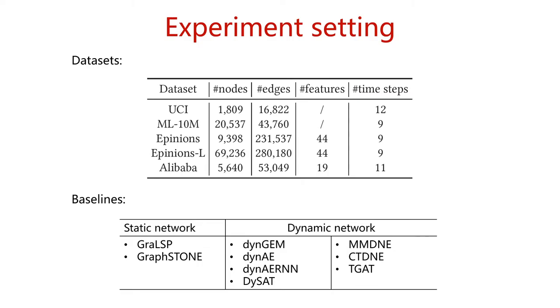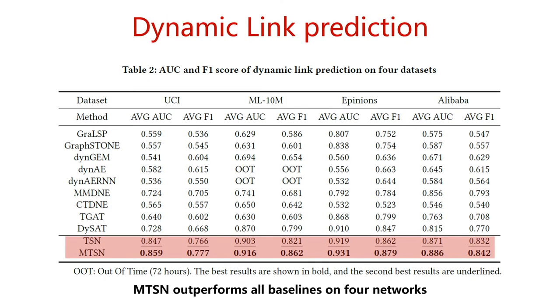For experiments, we use four datasets: UCI, MovieLens, Epinions, and Alibaba. For baselines, we use two static network embedding methods and seven dynamic network embedding methods. In the dynamic link prediction experiment, we evaluated the ability of the current node embedding to predict the connections between nodes in the future network.